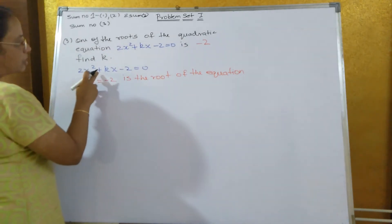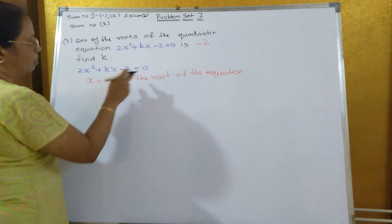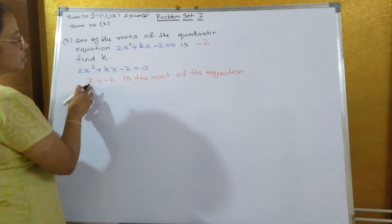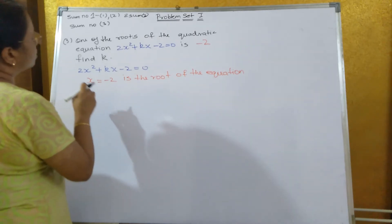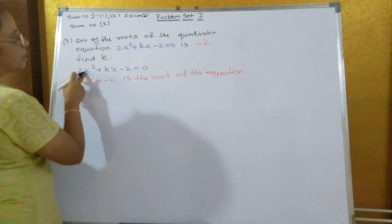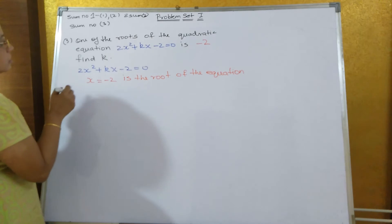So, the equation is 2x² + kx - 2 = 0. We have to put the value of x equal to minus 2. Since it is a root of the equation, when you substitute x equal to minus 2, your answer should be 0.